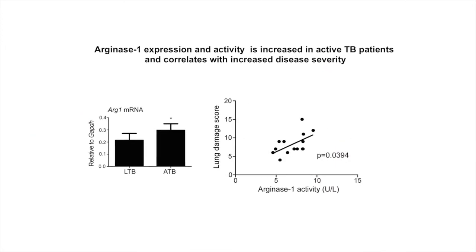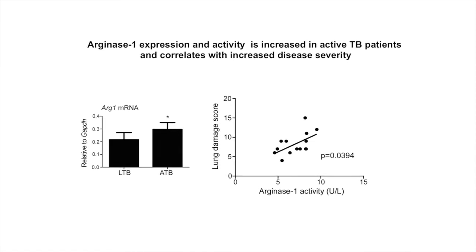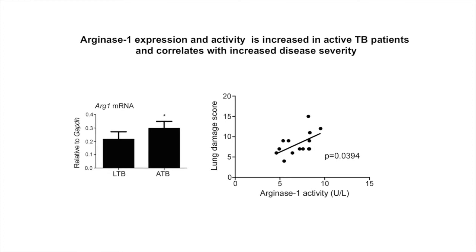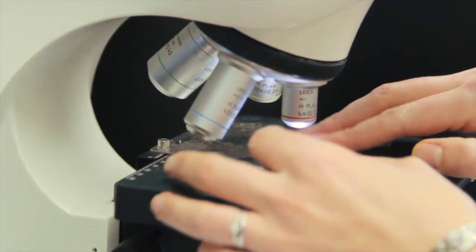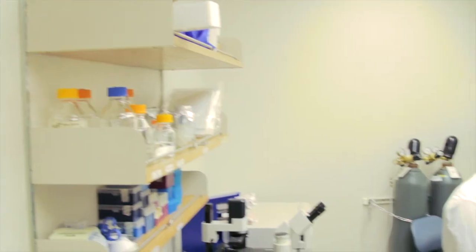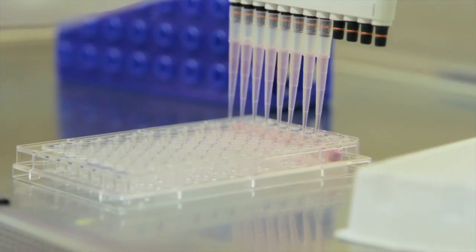Not only did we find increased arginase 1 activity in co-infected hosts, but we also found that active tuberculosis patients showed increased arginase 1 mRNA expression, and arginase 1 activity correlates with increased disease severity in active TB patients. Based on our results, we proposed that arginase 1 has a prominent role to play in inflammation and disease severity during tuberculosis. We have identified that helminth and its products can drive arginase 1 expression in pulmonary macrophages, thereby increasing disease severity to MTB infection. We also show that anti-helminth treatment and absence of arginase 1 expression in macrophages can reverse increased disease severity to MTB infection. Thus, we have described a new mechanism by which helminth co-infections increase susceptibility to tuberculosis.